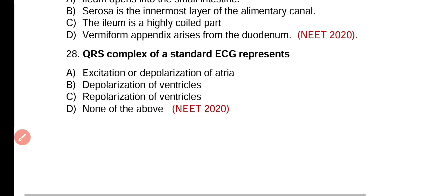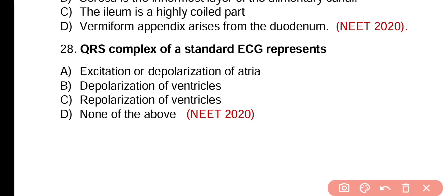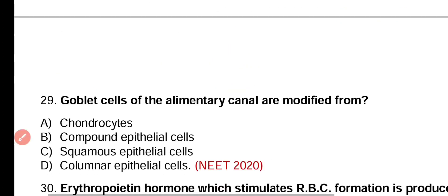Question number 28. QRS complex of a standard ECG represents: excitation or depolarization of atria, depolarization of ventricles, repolarization of ventricles, or none of the above? Correct answer is option B. In ECG, the QRS complex represents the depolarization of ventricles.